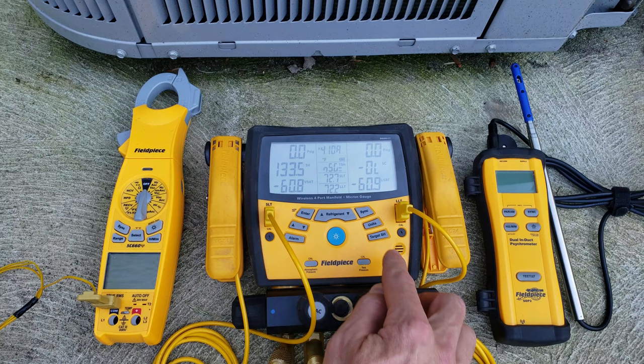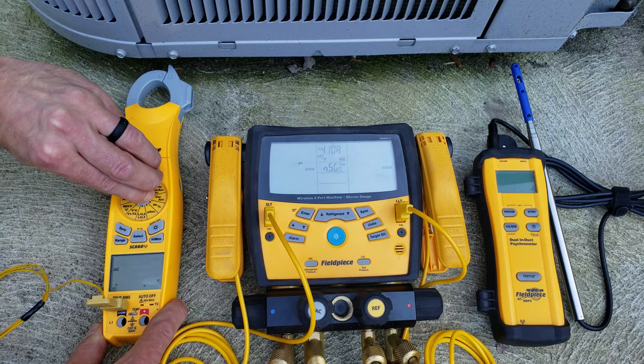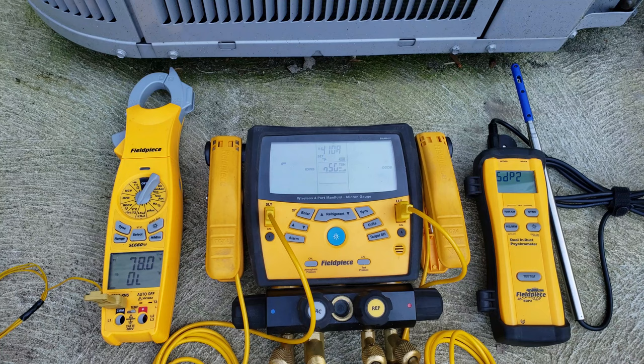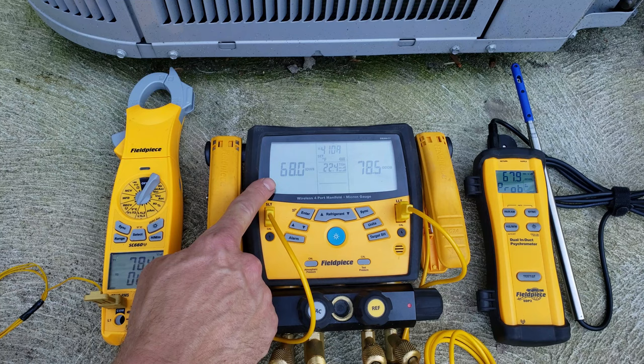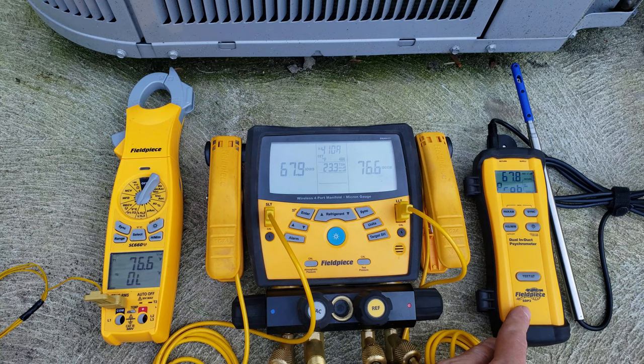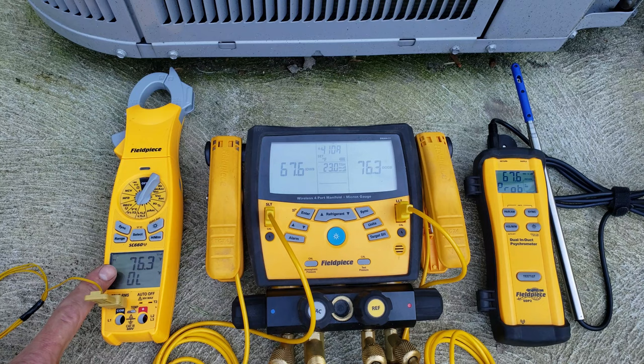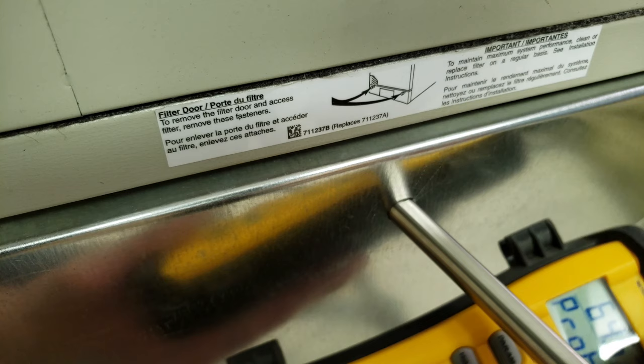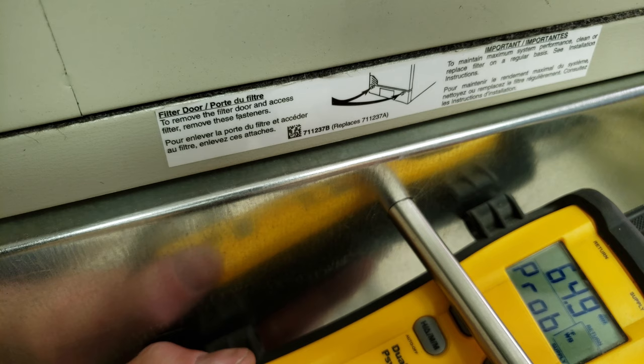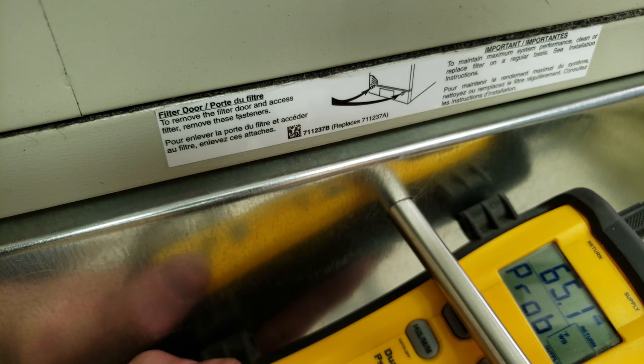Here we are outside with our digital manifold gauge set, and we need to determine what our target superheat is. Our manifold should recognize these other wireless tools here. You see our indoor wet bulb that's flashing right now, and it should come up. So we have 67.9, but I'm going to take this inside to our return. We have our outdoor dry bulb temperature, which we're going to measure about a foot away from the grill here. Here's our induct dual psychrometer. I only have one sensor on this right now, and this one will transmit a wireless wet bulb temperature out to the digital manifold set, such as the S-Man 460 or S-Man 480.